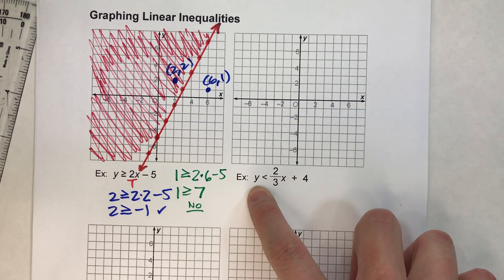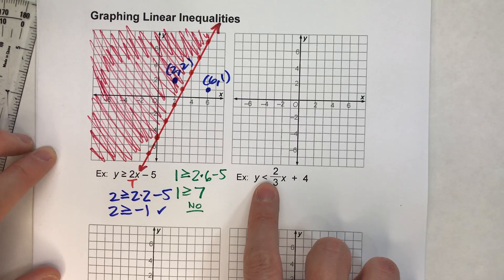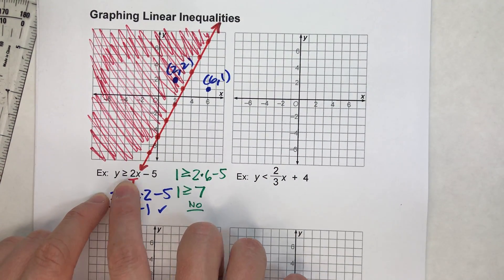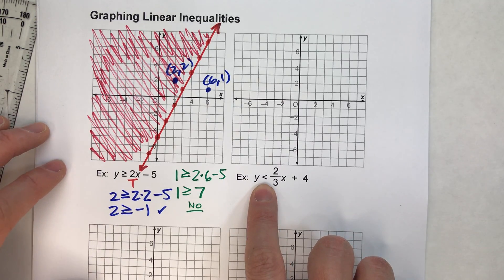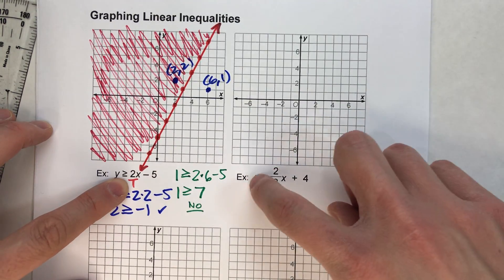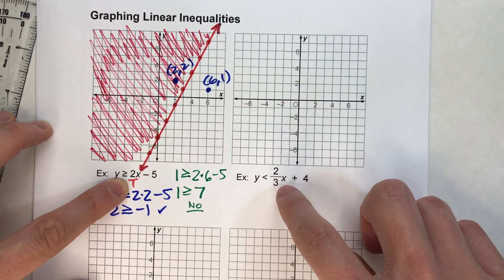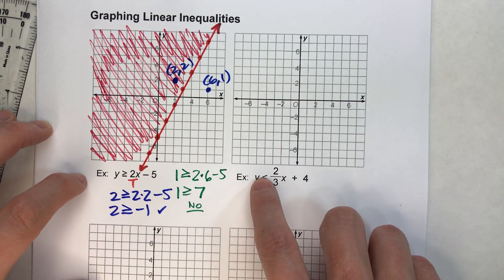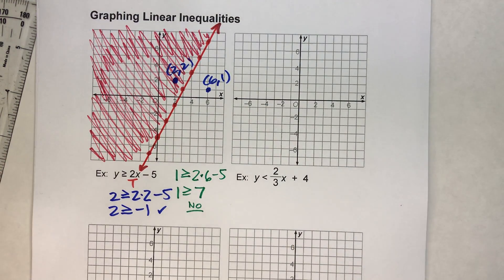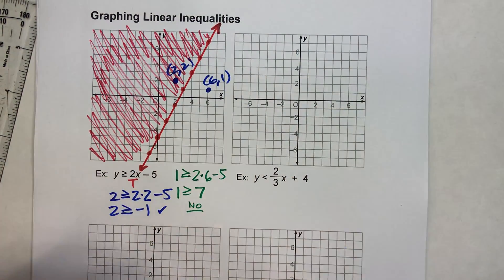This one says y is less than 2 thirds x plus 4. Notice the difference — this one is less than, and the previous one was greater than or equal to. When we say less than, that means when we create our boundary line, we can't pick points on the line as a solution because it has to be less than that line. So when we make our line this time, we're going to draw a dashed line instead of a solid line.